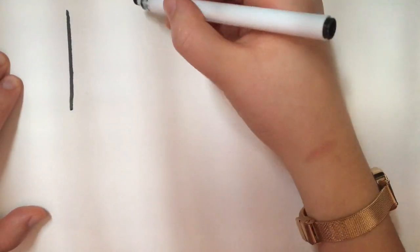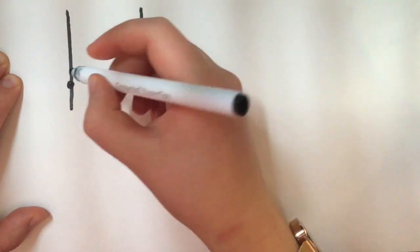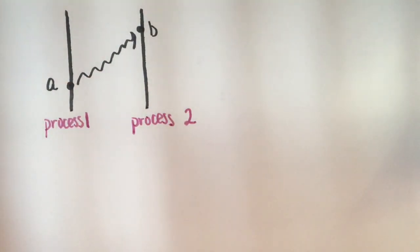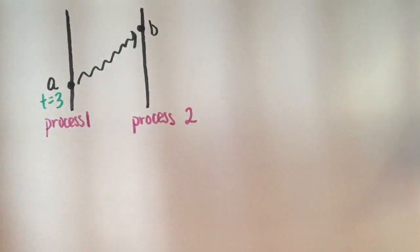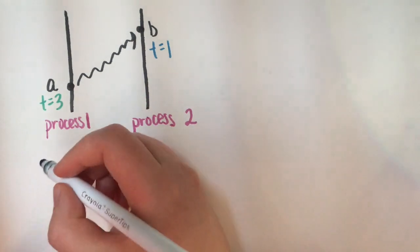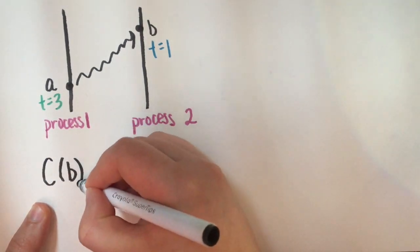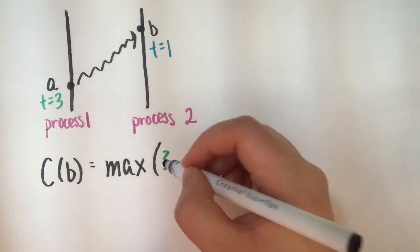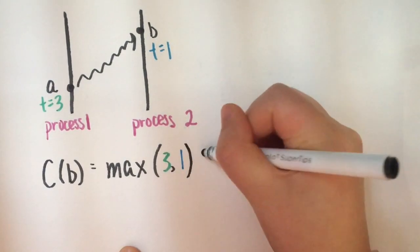Now, what if event A at time 3 on process 1 sends a message to event B at time 1 on process 2? Process 2's logical clock will update based on Lamport's clock algorithm. We'll take the maximum of the timestamp at each process and then increment by some arbitrary amount. The result is event B's new timestamp.